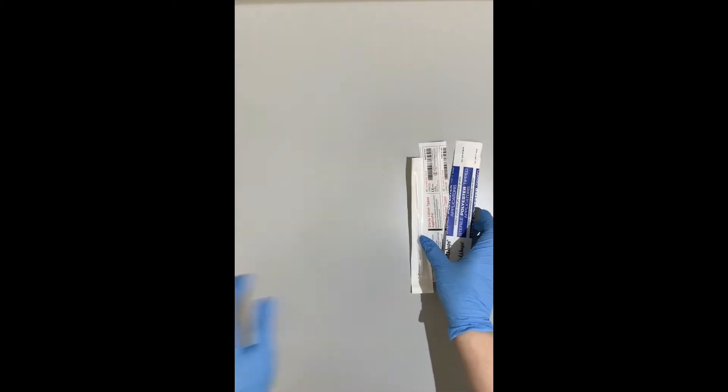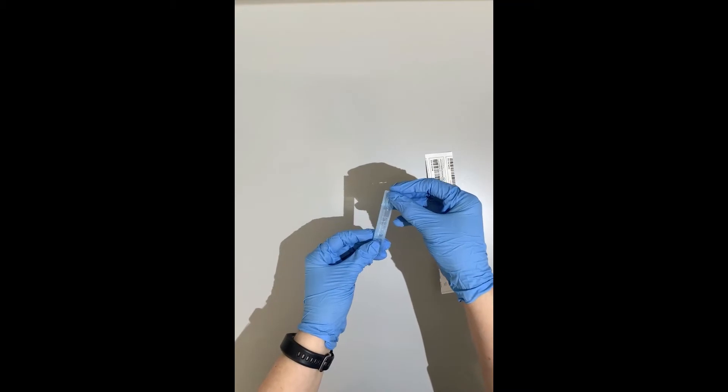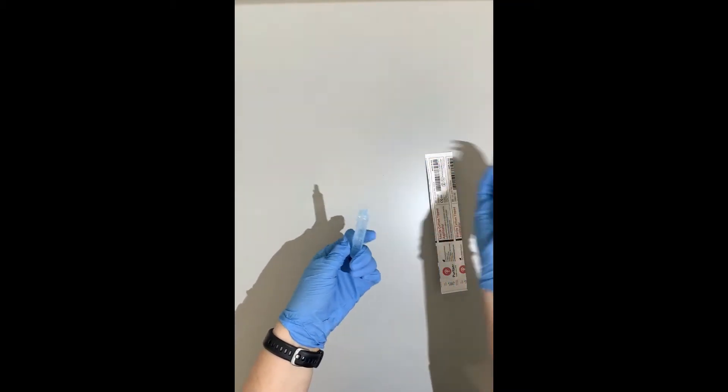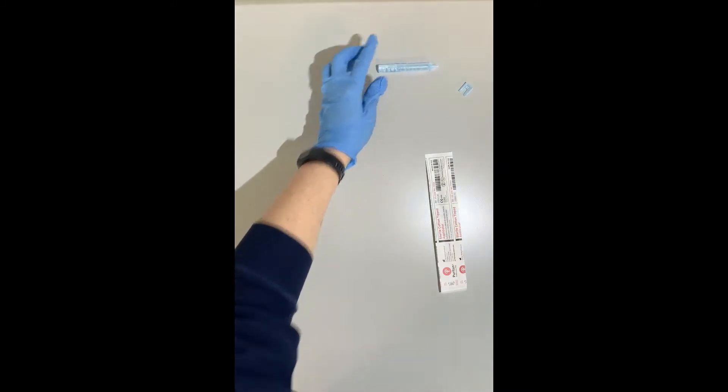Once you've selected the type of swab you're going to use, you'll also need sterile water. They come in little vials that look like this and you can twist the top off and you can have sterile water for the course of that collection at that one crime scene.